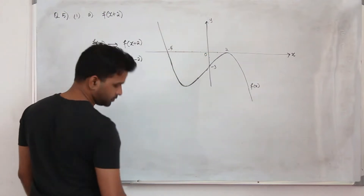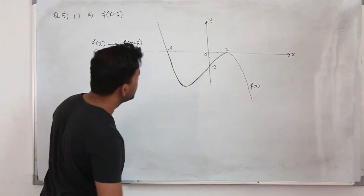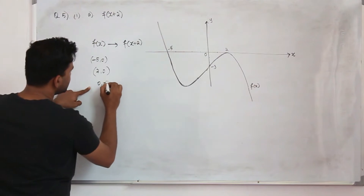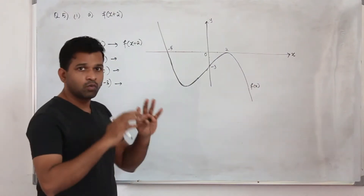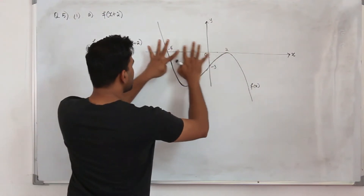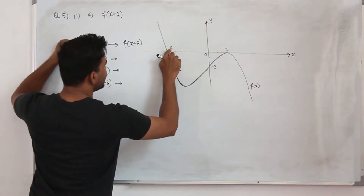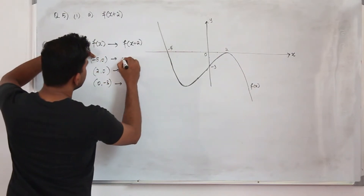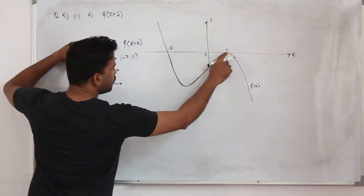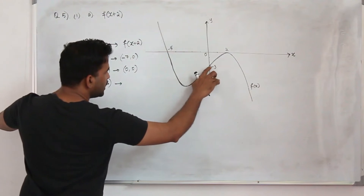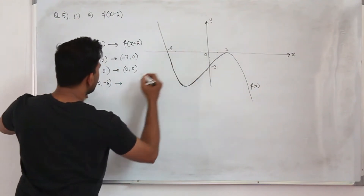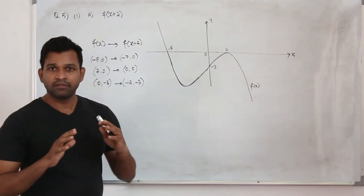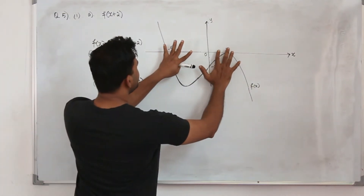So what will happen to these points? We have three points: minus 5 comma 0, 2 comma 0, and 0 comma minus 3 — that's the y-axis. When you apply this transformation, your y-coordinates will remain the same. The x-coordinate will be translated 2 units to the left, so you subtract 2 from the x-coordinate. This will become minus 7 comma 0; 2 will become 1 comma 0; and this point — the x-coordinate is 0 — so it becomes minus 1 comma minus 3. Y-coordinate will be the same; there won't be any changes in the y-coordinate.